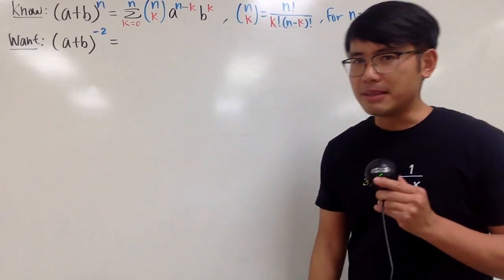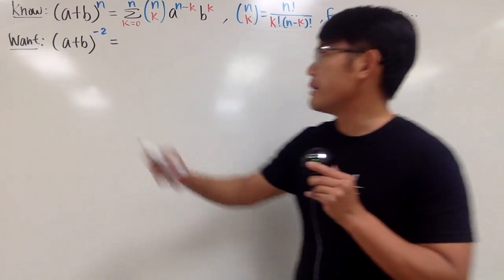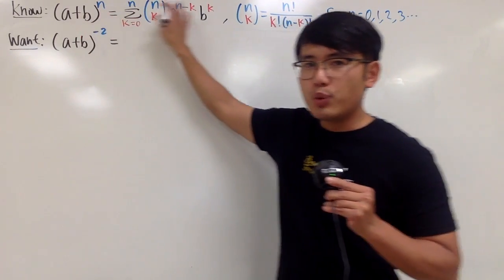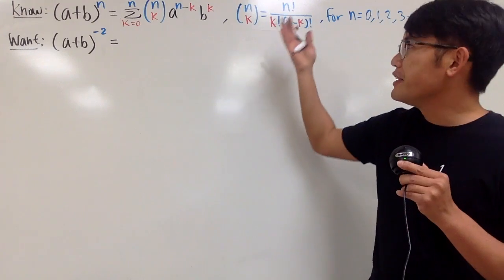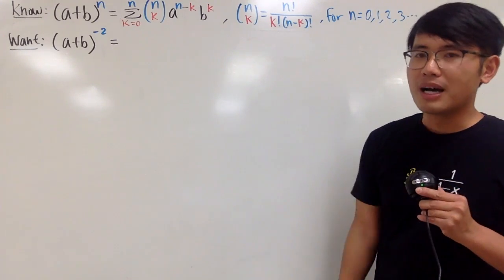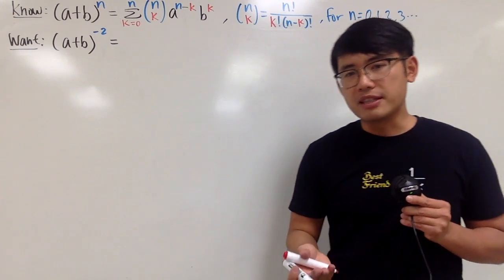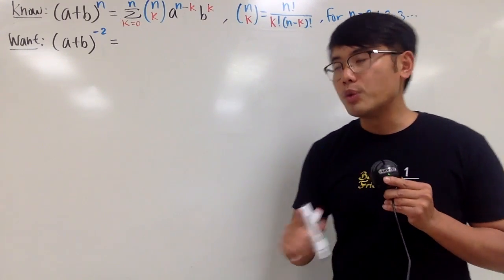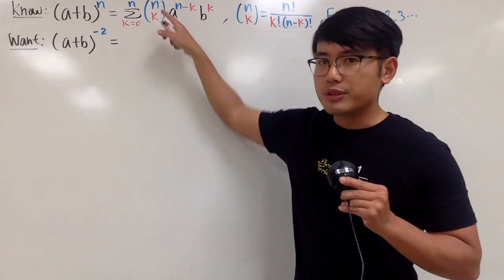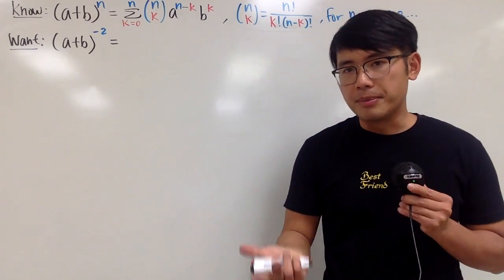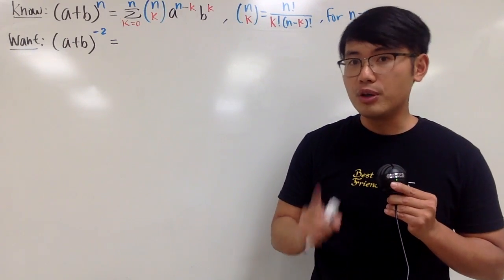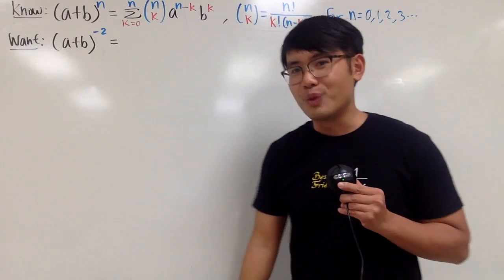Last time I showed you guys the binomial theorem, namely (a + b) to the nth power is equal to this. Here is your binomial coefficient formula, and I gave you guys an explanation why we have to multiply by n choose k, which is a combinatorial argument. If you haven't seen that video, be sure to go watch that.